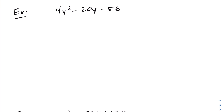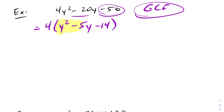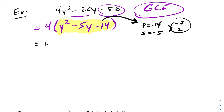Looking at this next question, you might initially think it's not a simple trinomial, but you should always look for a GCF first. In this case, I can factor out a 4: 4 divided by 4 is 1, leaving y squared; negative 20 divided by 4 is negative 5, leaving y; and negative 56 divided by 4 is negative 14. Now I'm left with a simple trinomial inside the brackets. The product is negative 14 and the sum is negative 5, so the two numbers are negative 7 and 2. This factors into 4 times y minus 7 times y plus 2.